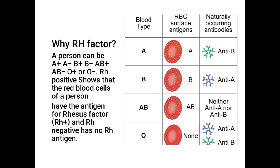The Rh factor is an antigen that is present on the surface of red blood cells. If a person has the Rh factor on the surface of their red blood cells, that person is Rh positive. A person cannot be both Rh positive and Rh negative, just as a person cannot have two blood groups — only one blood group among the eight mentioned.